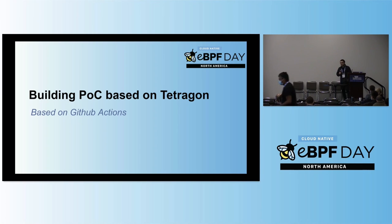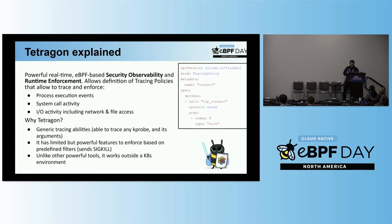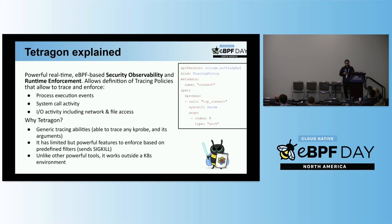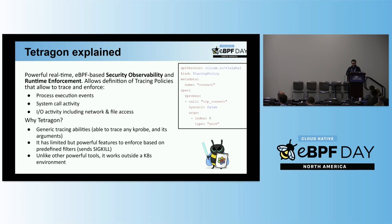I'm going to show you a POC that I built based on Tetragon to demonstrate the concept, executed on GitHub Actions. Tetragon is an extremely powerful tool that allows observability and runtime enforcement for security purposes. I chose Tetragon specifically because it's highly generic — it allows you to build policies and load them into the Tetragon engine, which is a highly capable engine that loads them into BPF code.